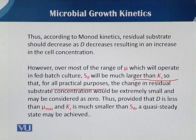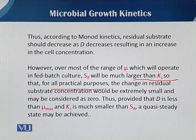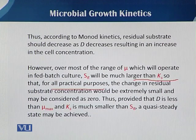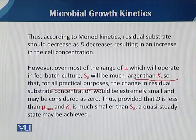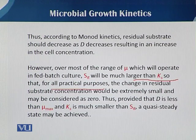For all practical purposes, the change in residual substrate concentration would be extremely small and may be considered as zero. Thus, provided that D is less than mu-max and KS is much smaller than SR, in this stage the quasi steady state may be achieved. You have seen in this discussion how the specific growth rate and initial substrate concentration relate with respect to KS, and if we focus on all these parameters during fed batch, that state produced is known as quasi steady state.